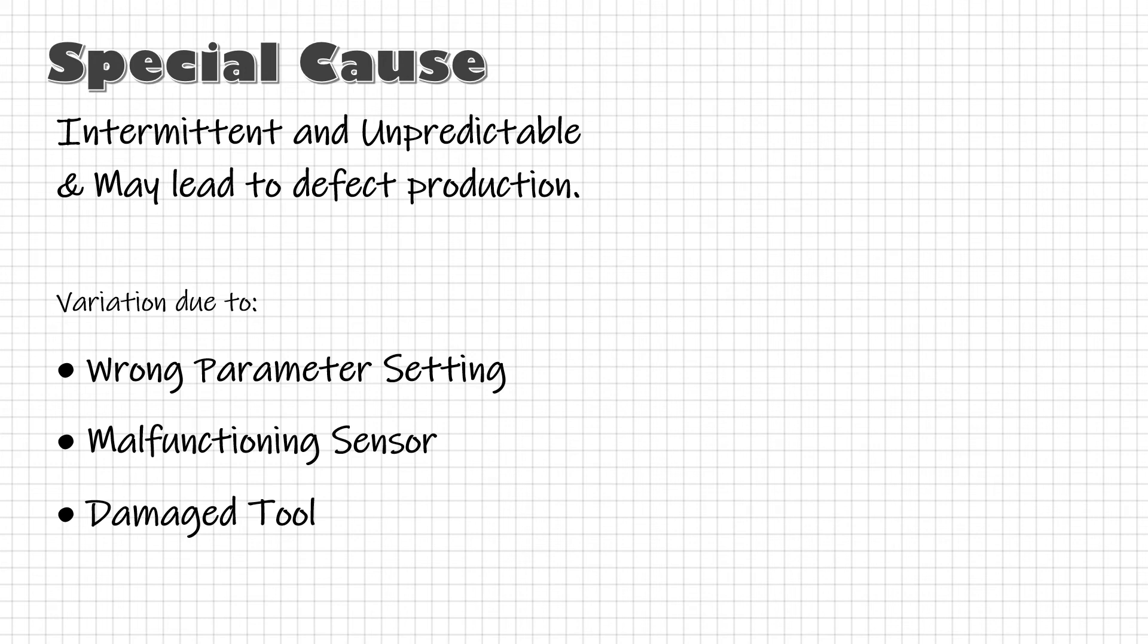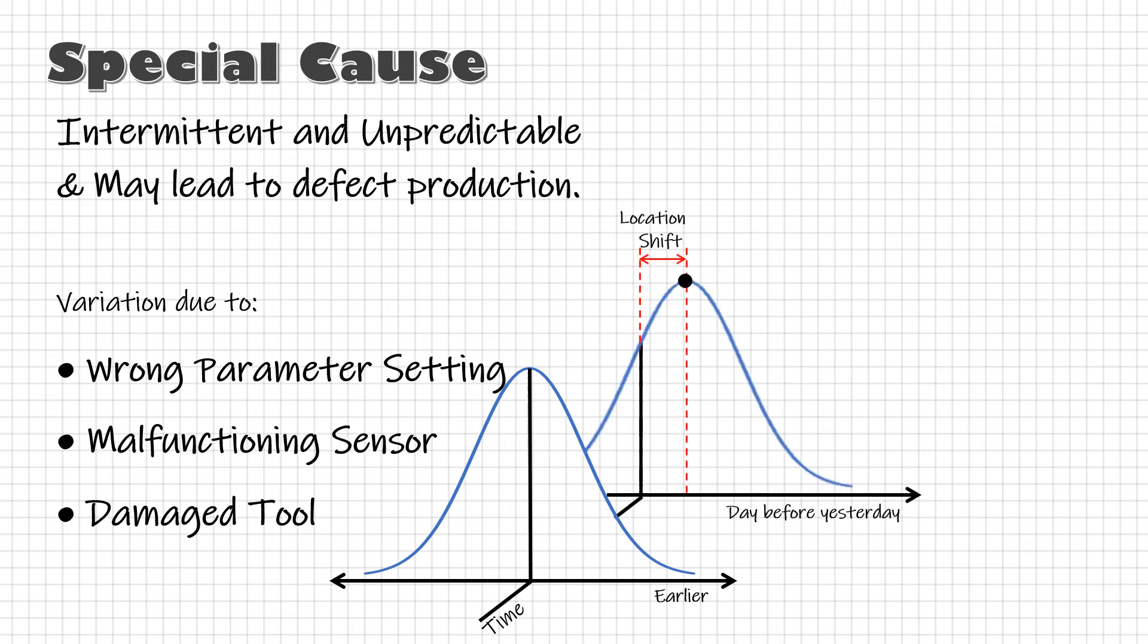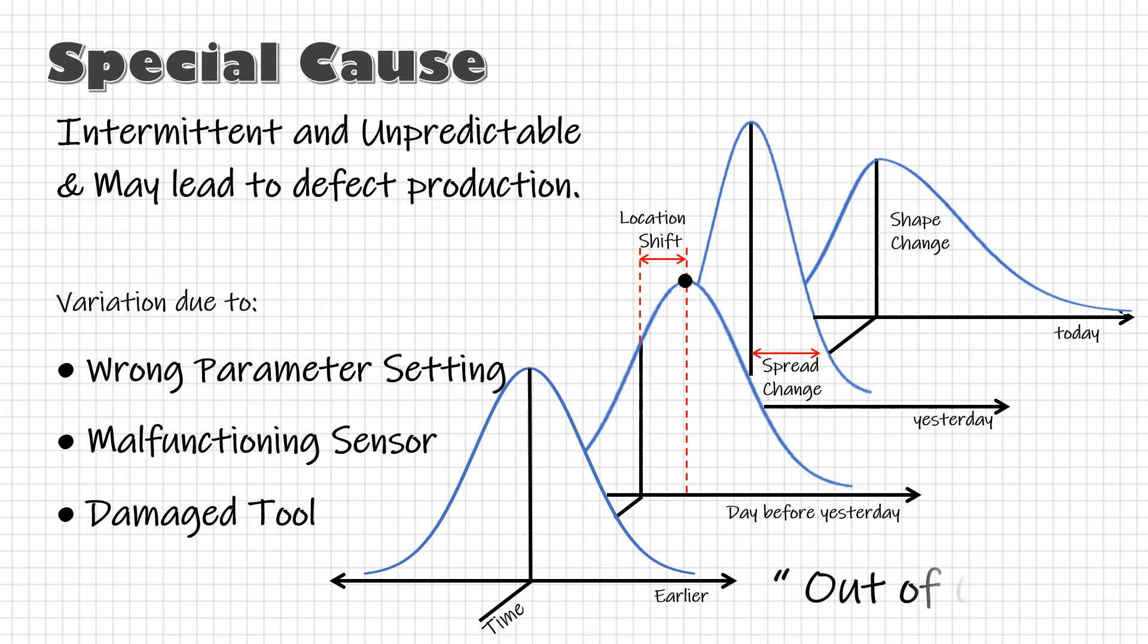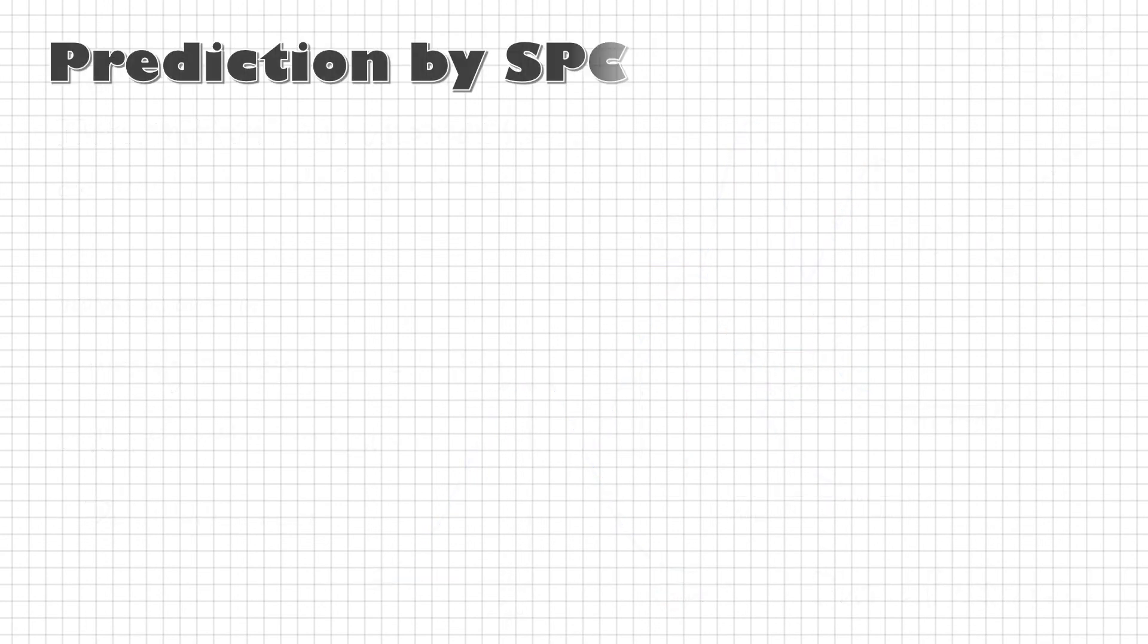Again, if the special causes are present in a process, the output is not stable over time. It may change in location or spread or in shape. The concerned process is said to be out of control and is unpredictable.